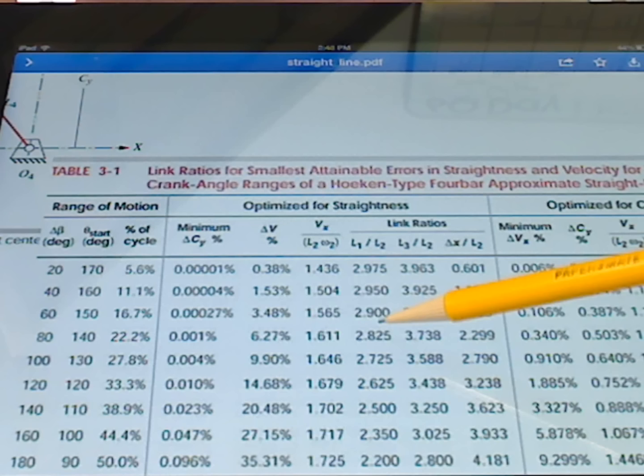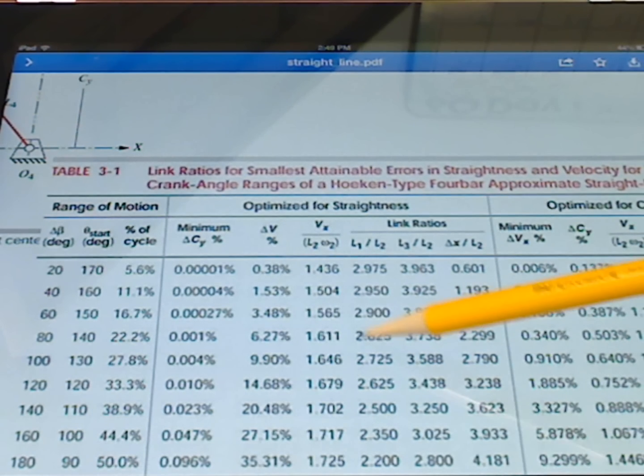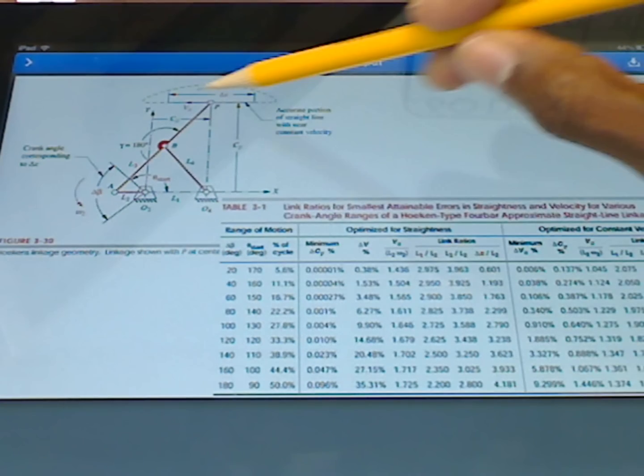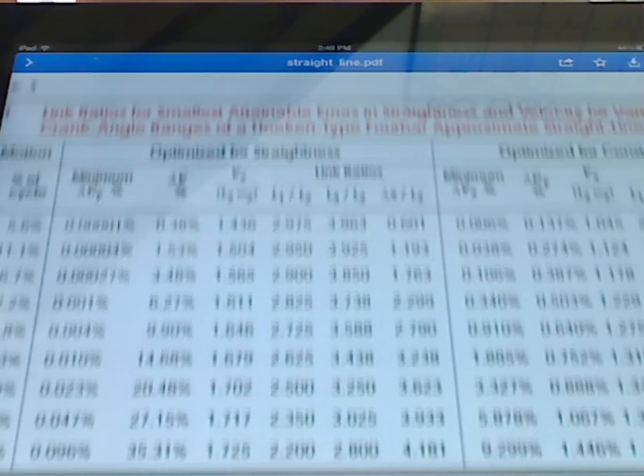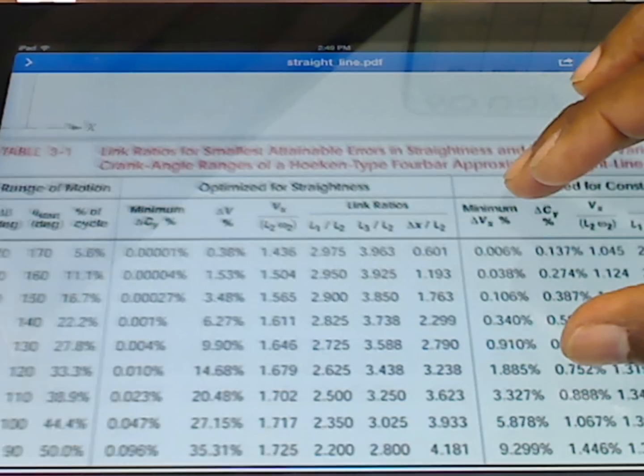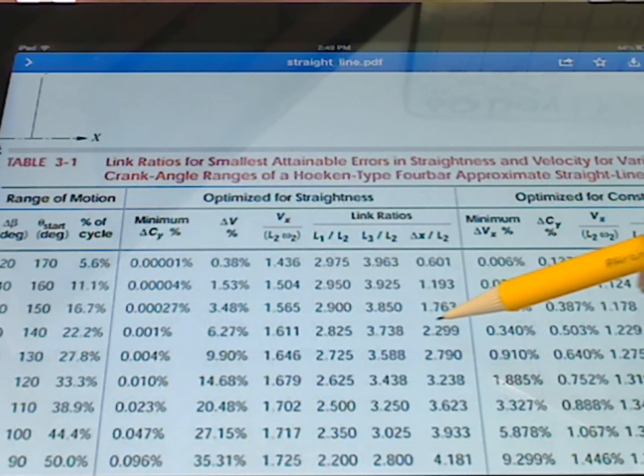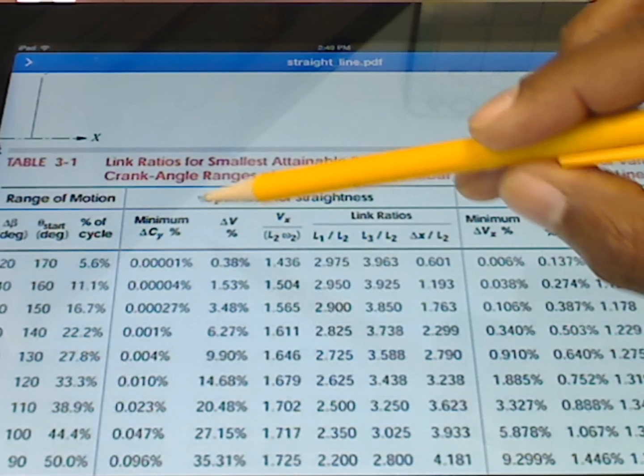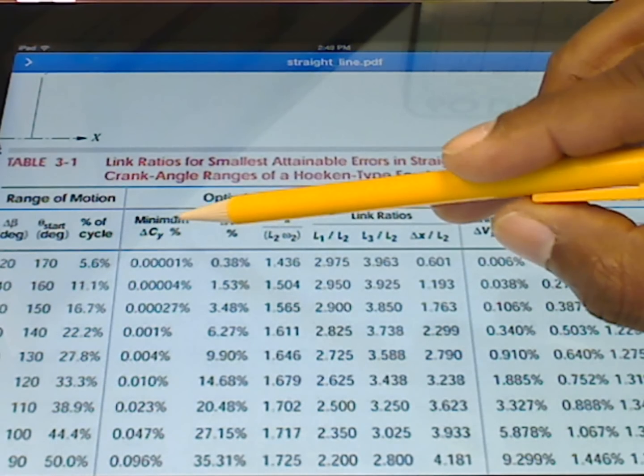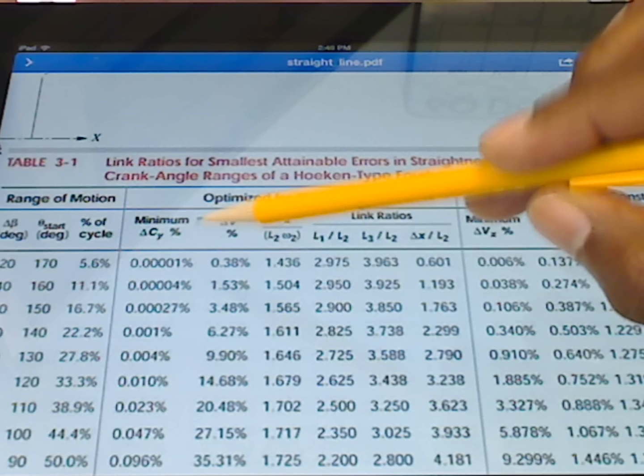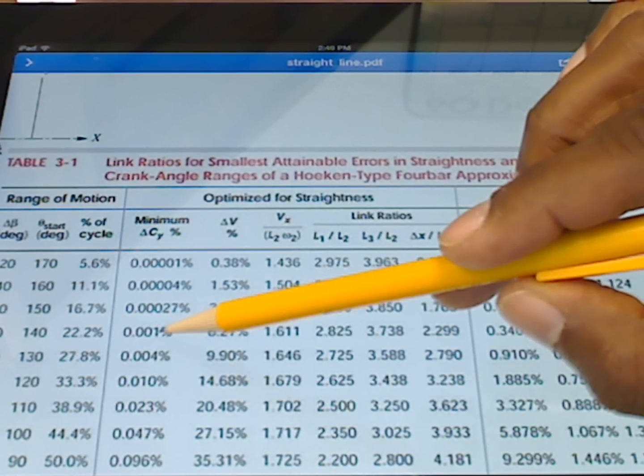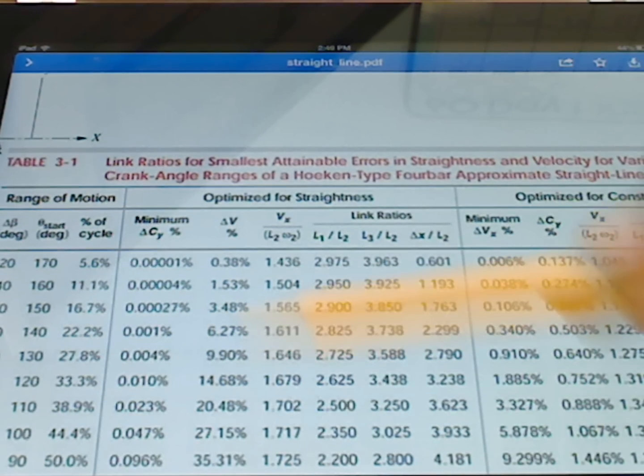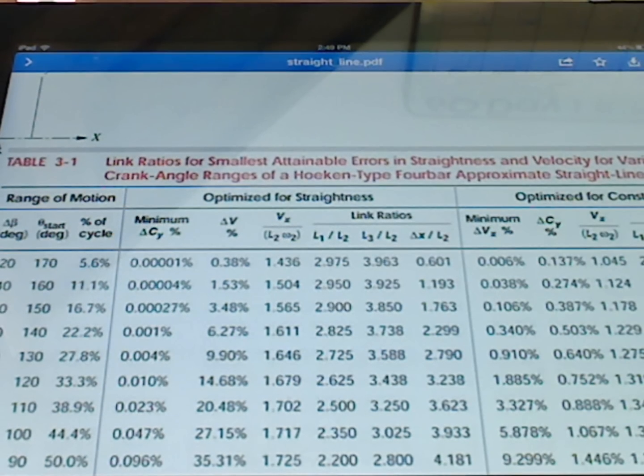So given L2's length, for example, 1 inch, we'll know that the L1 is equal to 2.8 inches, the L3 is 3.7 inches, and the delta x, the portion that will be straight, again focusing here, is in this case going to be equal to 2.3 inches almost. That's going to give a straightness where we're going to minimize the change and minimize the error of about 0.001% straightness. So that's very close to perfectly straight.